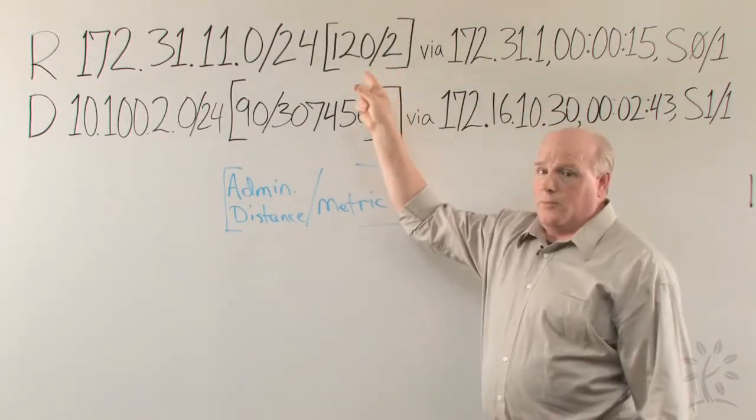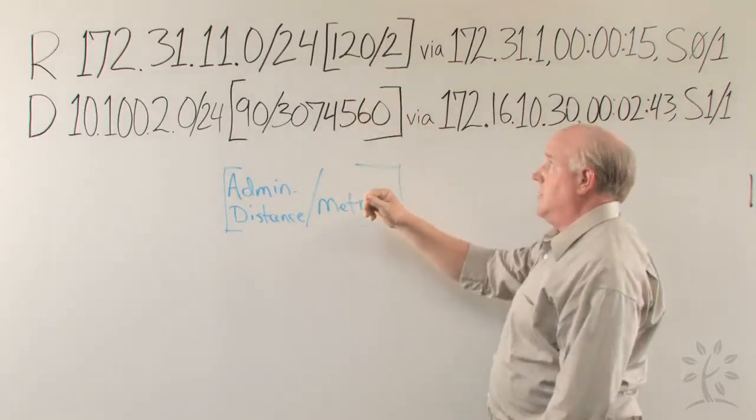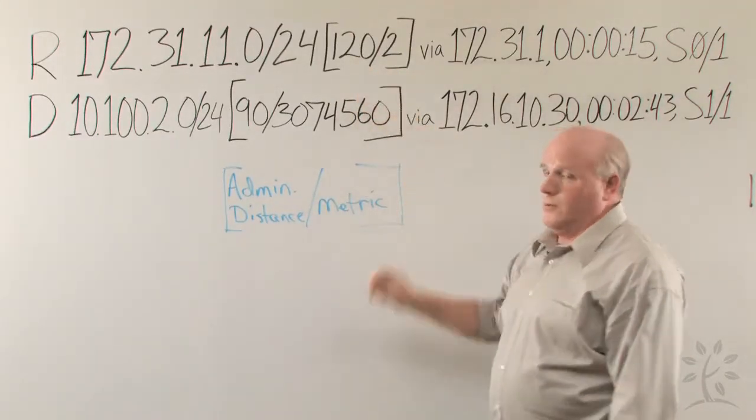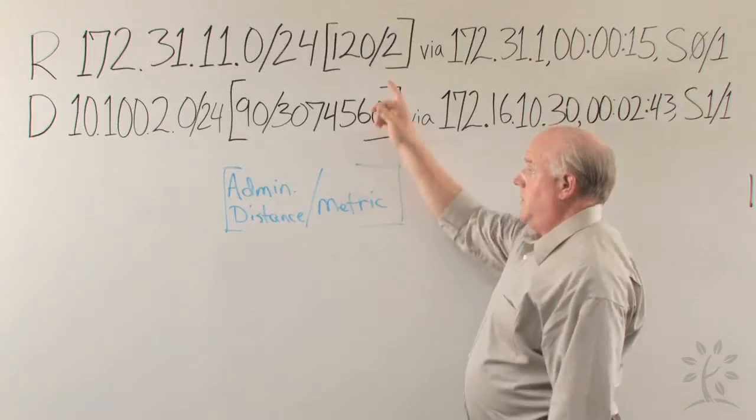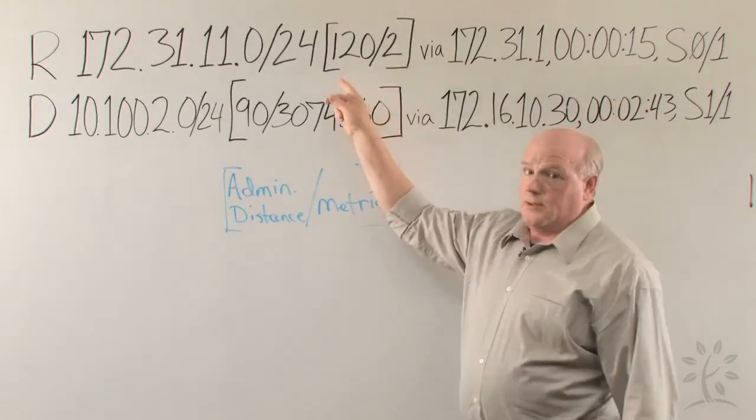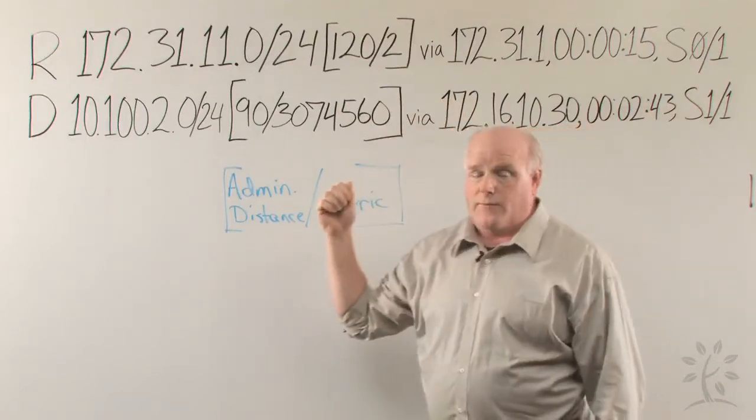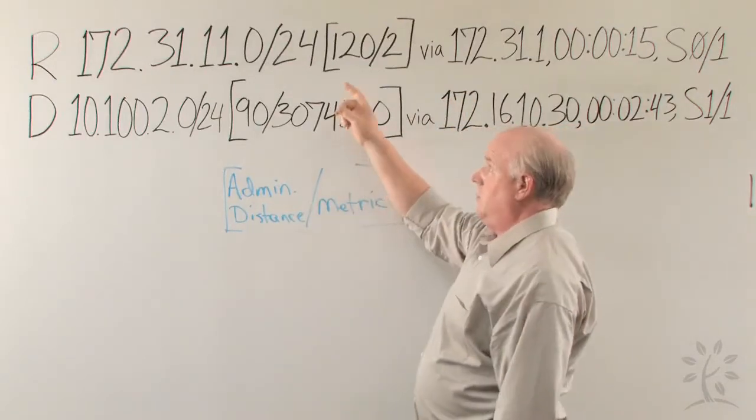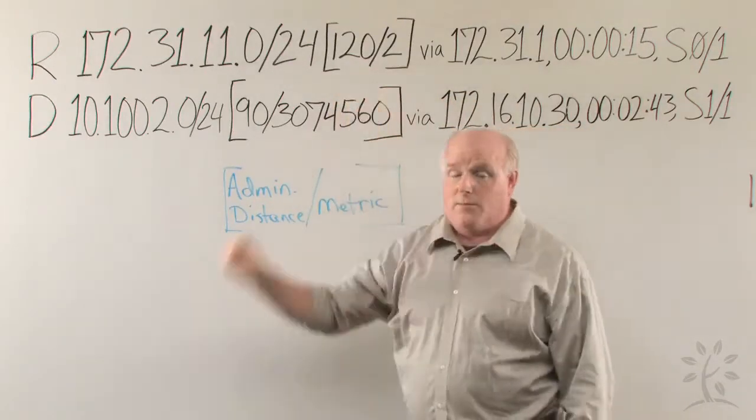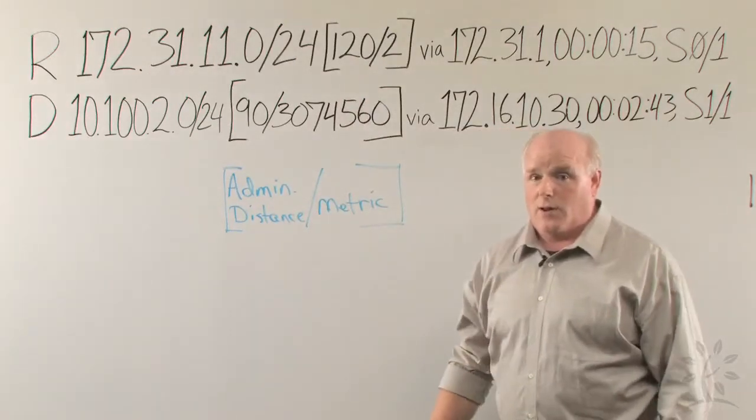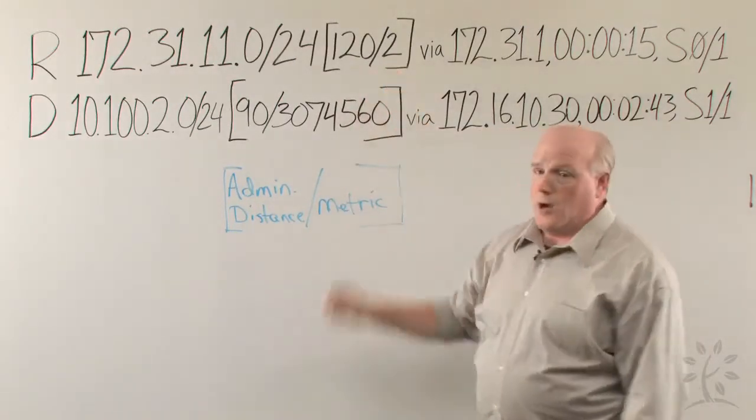But what about these two numbers in between inside the brackets? We have 120 slash 2. Well, that means that is the administrative distance and the routing metric. So there's a little more information that it's telling us. It's saying that RIP is running at its default administrative distance of 120, and it's two hops away.